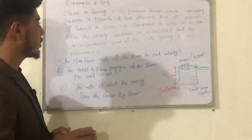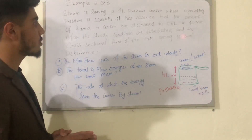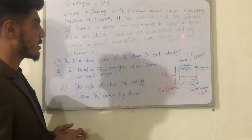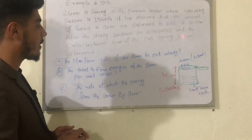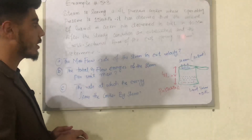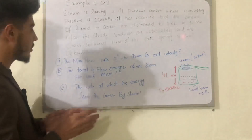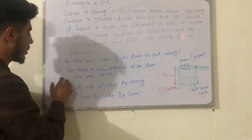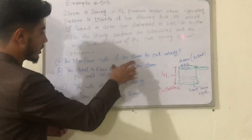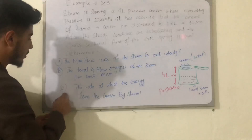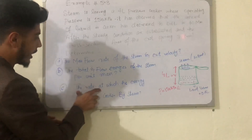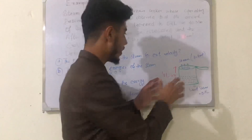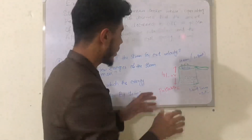It has been observed that the amount of liquid in the cooker has decreased by 0.6 liter in 40 minutes after steady conditions are established, and the cross-sectional area of the exit opening is 8 millimeter square. We need to determine: the mass flow rate of steam and exit velocity.